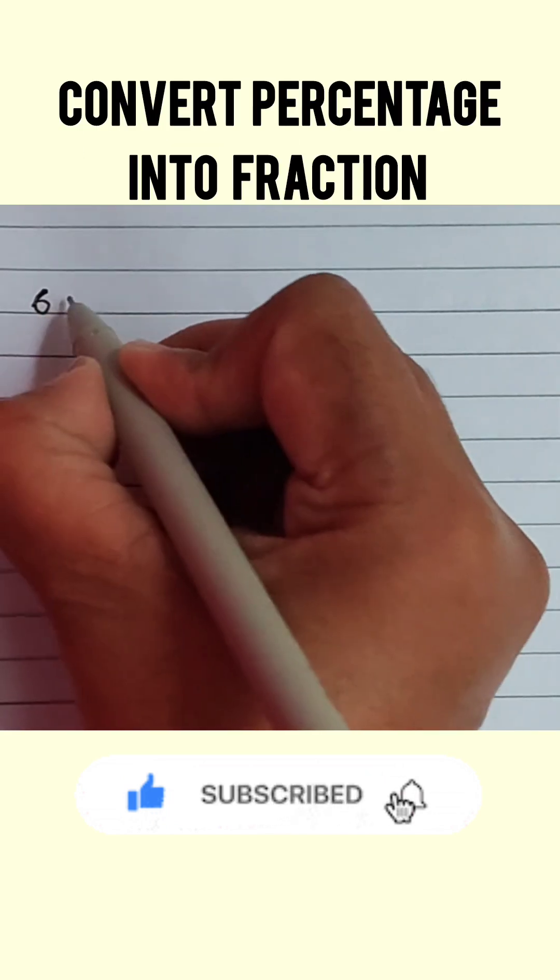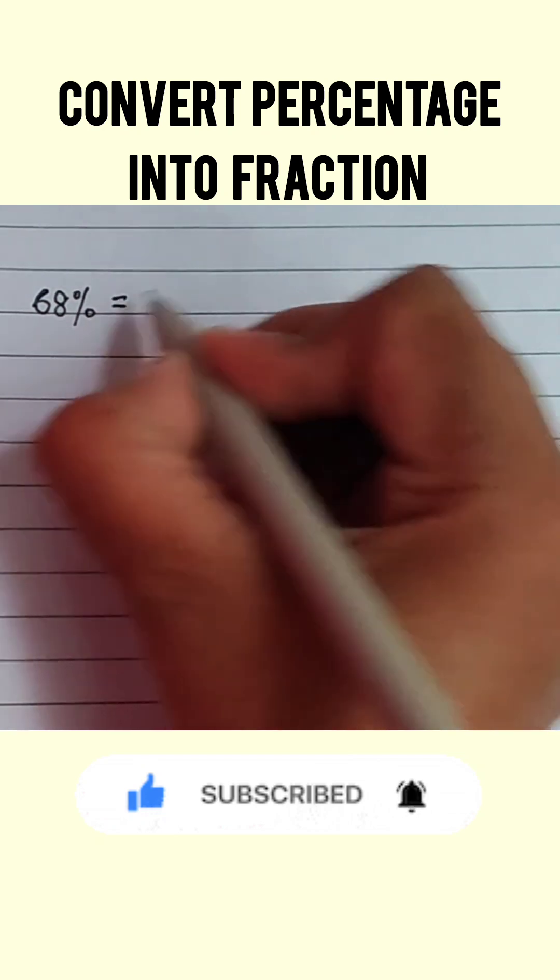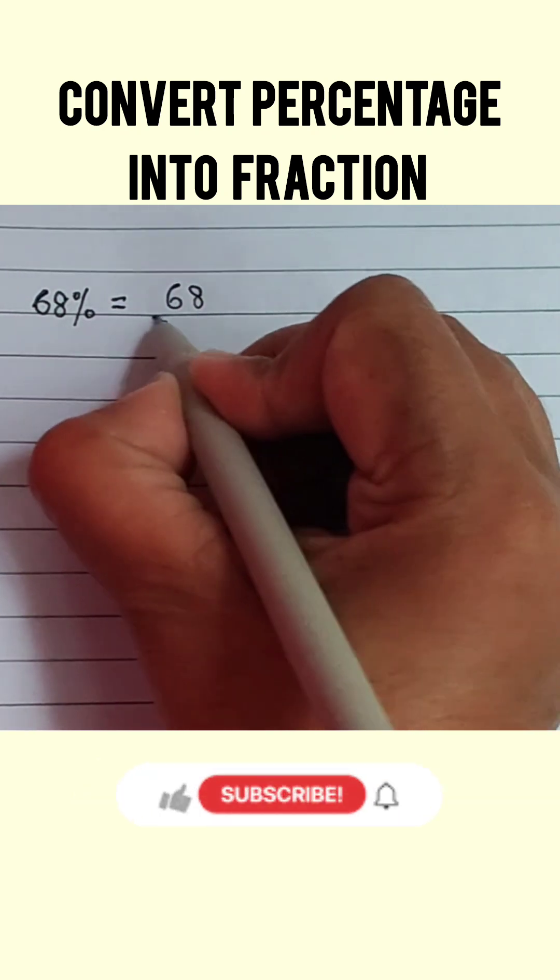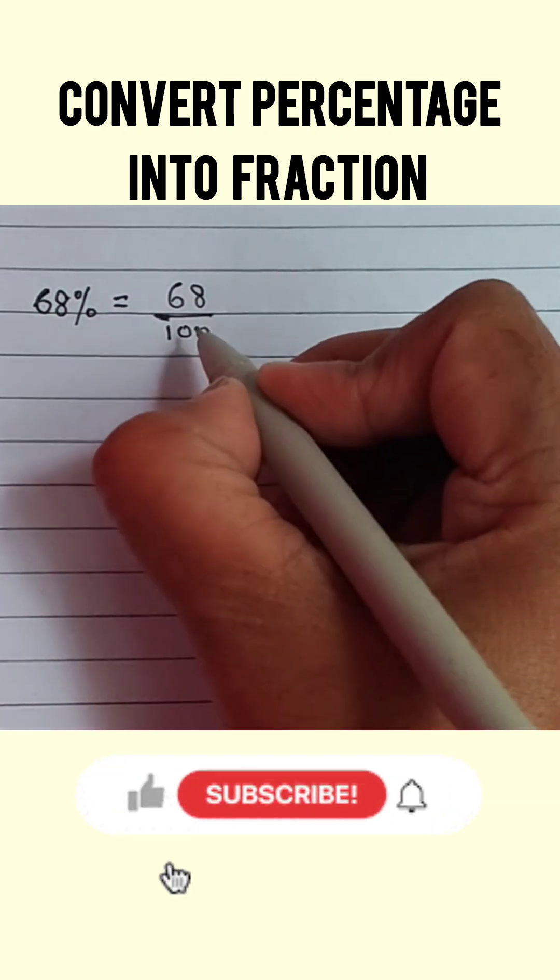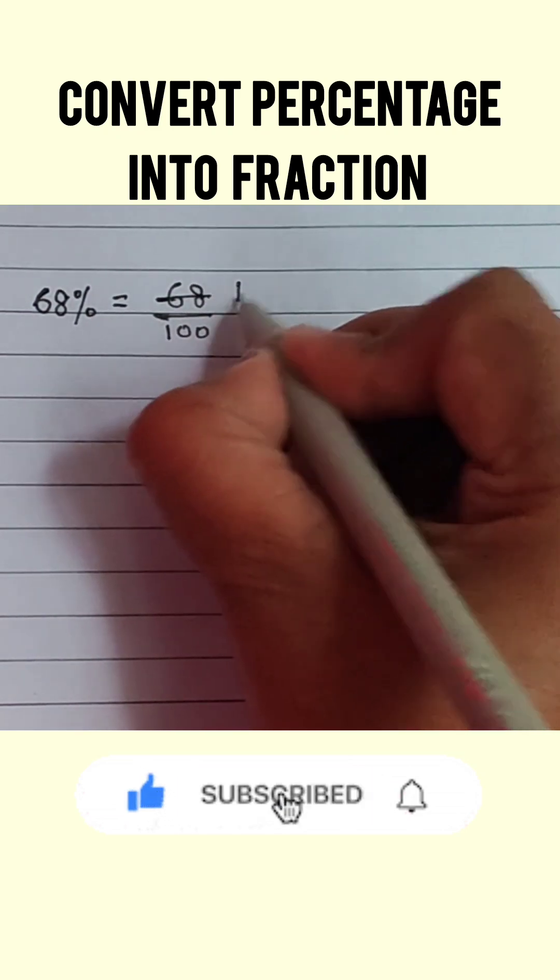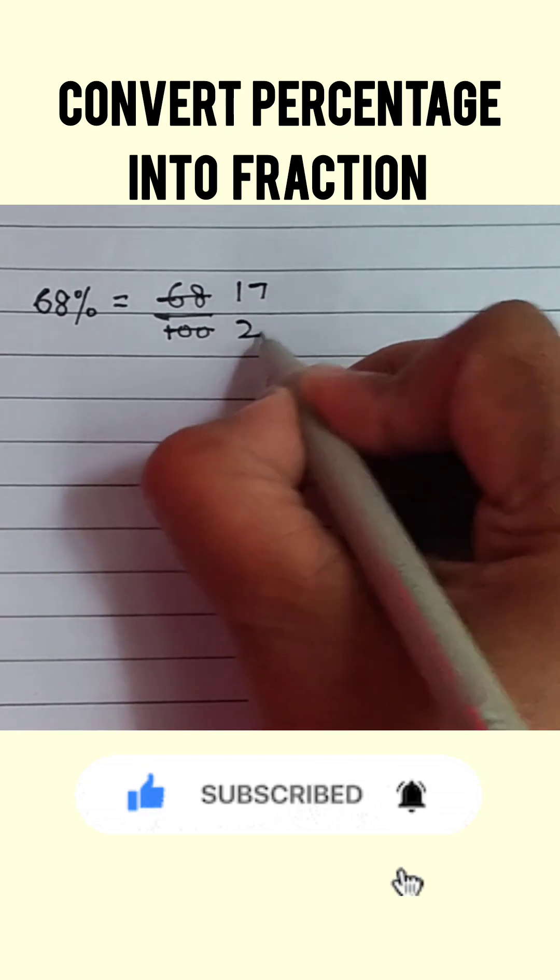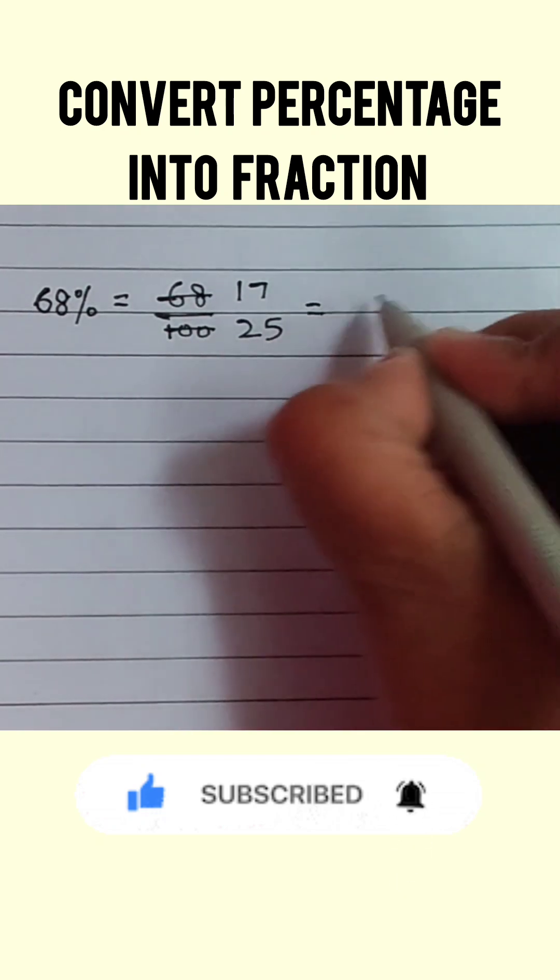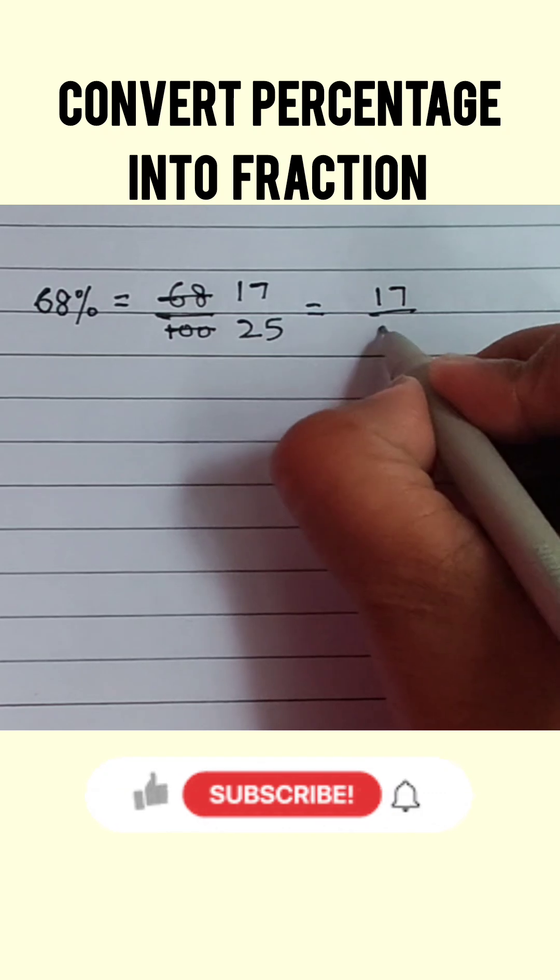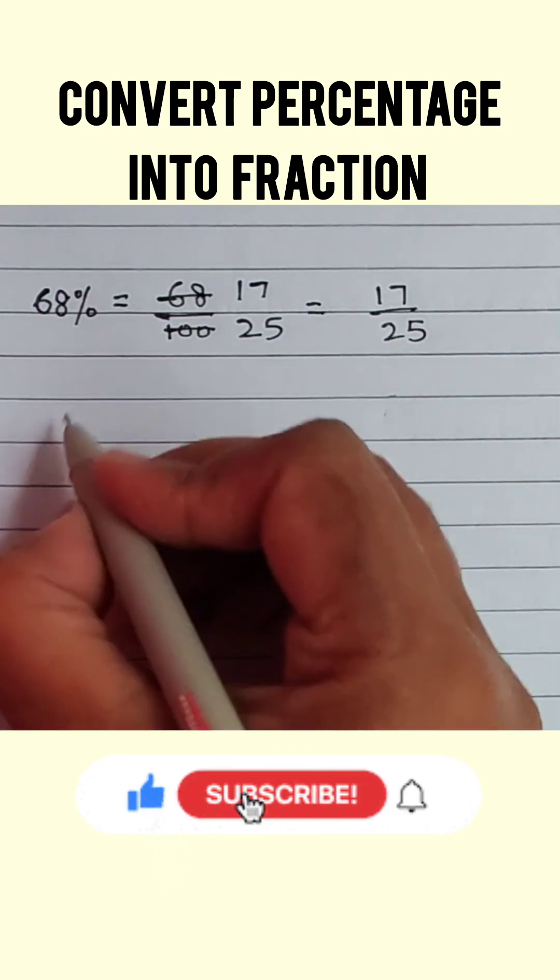68%. So 68 upon 100. Now we will reduce it to the lowest term. We will divide numerator and denominator both by 4. So 68 will become 17 because 17 fours are 68, and 100 will become 25. So 68% is equal to 17 upon 25 in the lowest term.